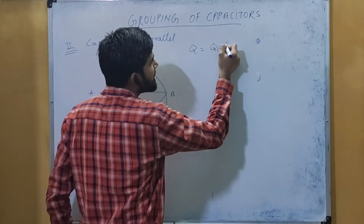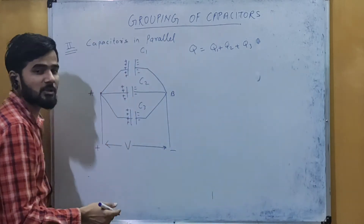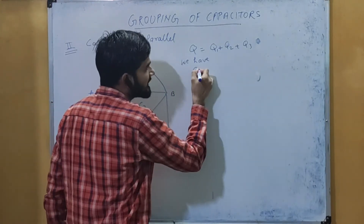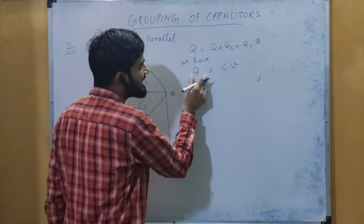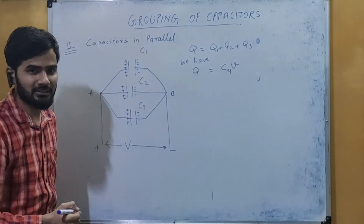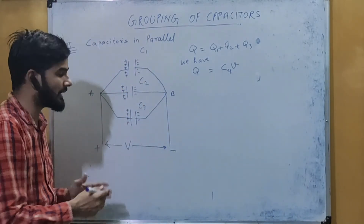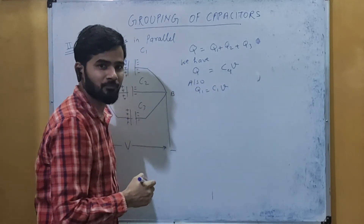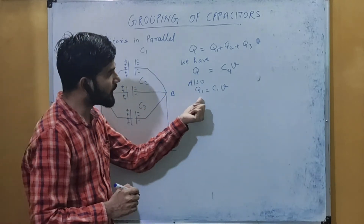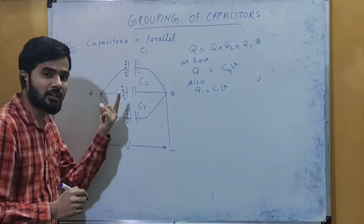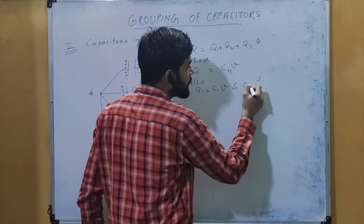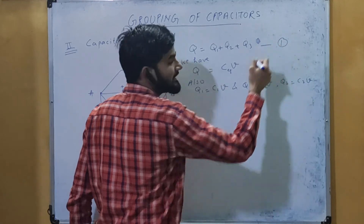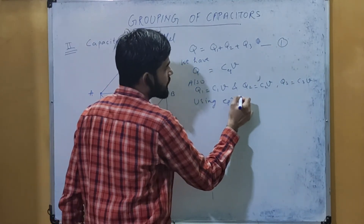In the parallel combination, Q = Q1 + Q2 + Q3 — whatever charge the battery sends, the same total charge gets divided among the three capacitors. Using Q = CV, if Q is the total charge then C is the equivalent capacitance and V is the total potential applied. Similarly, Q1 = C1·V, Q2 = C2·V, and Q3 = C3·V, since the potential V is the same across all capacitors.